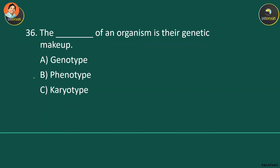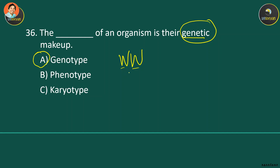The blank of an organism is their genetic makeup. This is located inside the cell — you cannot see it directly. This is called the genotype, usually symbolized with letters representing two alleles working together to determine the gene expression.